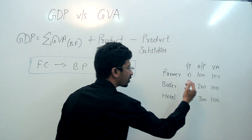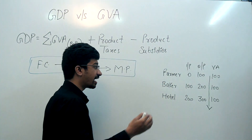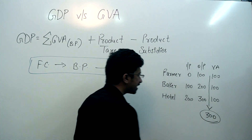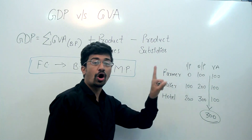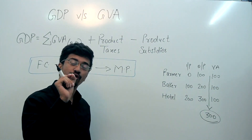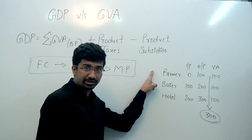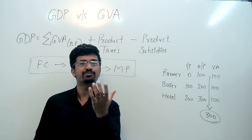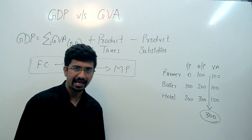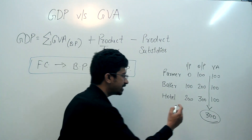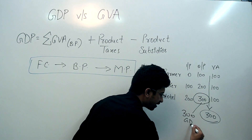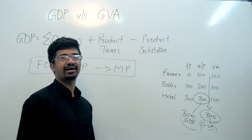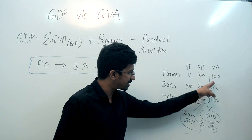इस पूरी process में total value addition: farmer का 100 + baker का 100 + hotel वाले का 100 = 300 रुपए। यही gross value added है। और GDP की definition है — value of all final goods and services produced within the territory within a certain period of time — जो यहाँ 300 रुपए है। तो GDP और GVA दोनों 300 रुपए आये — दोनों same हैं।